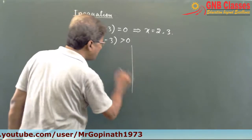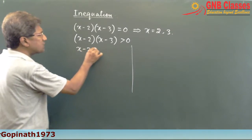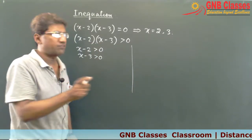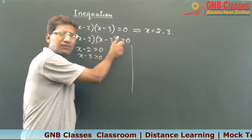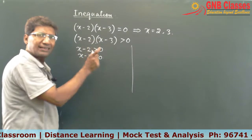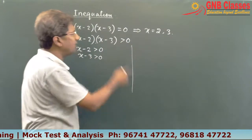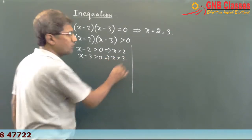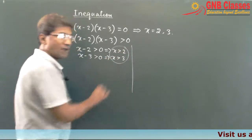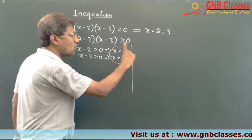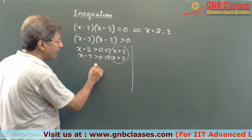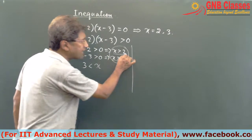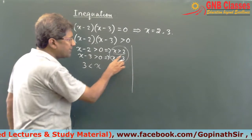One approach: say x minus 2 is greater than 0 and x minus 3 is greater than 0. When two factors are positive and you multiply them, you get something greater than 0. From the first you get x is greater than 2, from the second x is greater than 3. Combining these two, x is greater than 3, because x greater than 3 will satisfy both conditions.